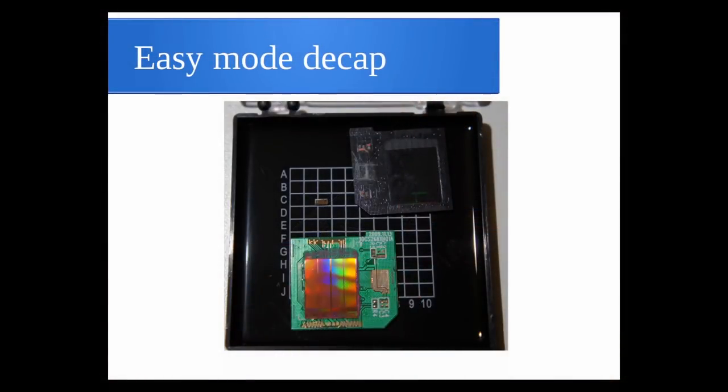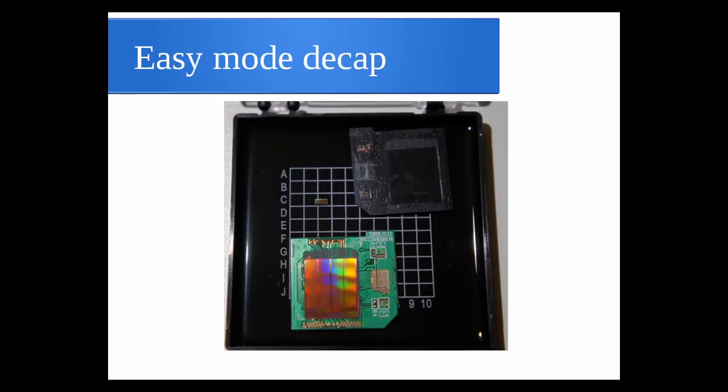We wanted to decap some chips. My instinct was to find nitric acid, a fume hood, and safety gear to digest them. But Zobz said he thought you could just take it off with a screwdriver. He started flexing it, and the top just popped right off. You can see the imprint of the chip, the PCB, the plastic where it was bonded — a pretty much perfectly intact chip with the controller. That was the easiest decap job we ever did.